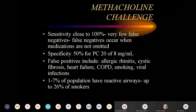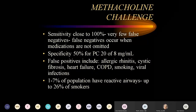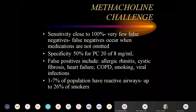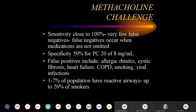Alternatives to methacholine challenge include peak flow monitoring — a 20% variability in peak flows suggests asthma. Emergency department peak flow records can also be useful: if a patient's peak flow went from 100 in the ER to 400 after treatment, that demonstrates reversibility. Not every patient needs methacholine challenge to diagnose asthma, but it is important to confirm the diagnosis before initiating treatment.